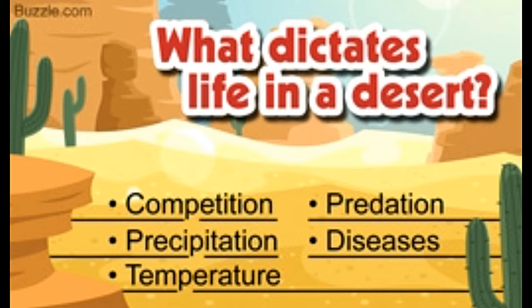A balanced food web is a necessity when it comes to the smooth functioning of an ecosystem. If the population of a particular species in a region increases, it can put tremendous pressure on available resources and bring down the entire food web, eventually leading to chaos in the ecosystem. So how is this balance maintained? This is where the limiting factors come into play.